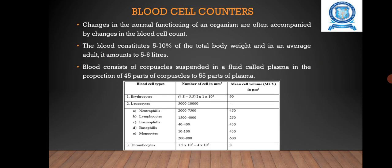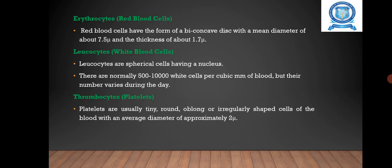Changes in the normal functioning of an organism are often accompanied by changes in the blood cell count. The blood constitutes 5 to 10 percent of the total body weight and in an average adult it amounts to 5 to 6 liters. Blood consists of corpus cells suspended in a fluid called plasma in a proportion of 45 parts corpus cells to 55 parts plasma. The blood cells are divided into groups according to their form and functions as shown in the table.